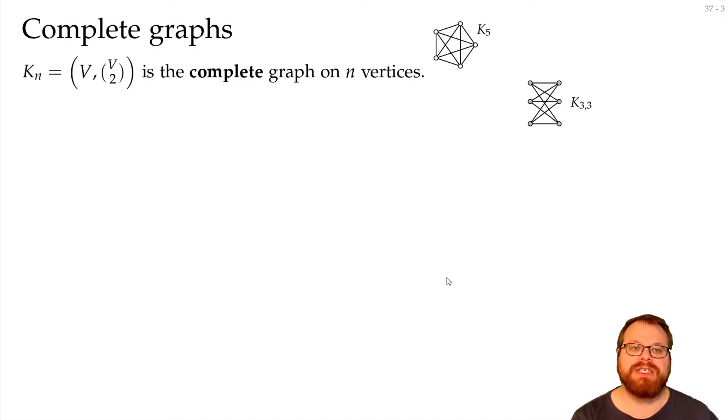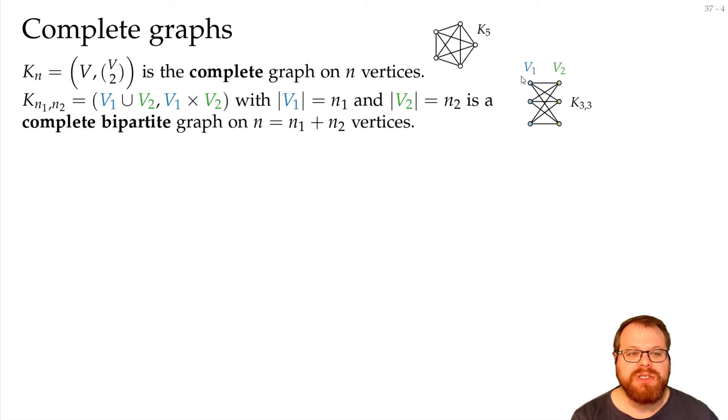And then there are also so-called bipartite complete graphs, like the k33 that we have here. For that we have two sets of vertices, v1 and v2. And every vertex of v1 is connected to every vertex of v2.